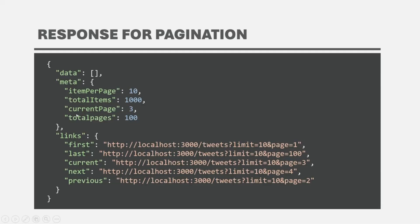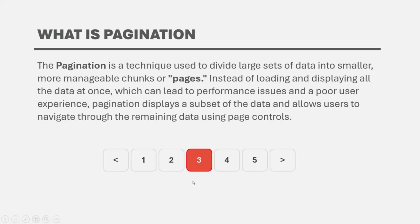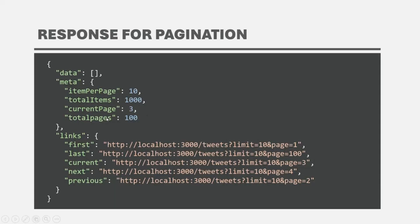In the response, we will also specify what is the current page for which we are sending the data, and how many total pages there are. This information can be used in the frontend to implement the pagination UI. For example, if the user wants to highlight the currently selected page, they can get the current page from the response and highlight it accordingly. In the UI, we will have pagination with all page numbers and previous and next buttons. If we know how many total pages there are, that can also be displayed in the UI. All this information is sent with the meta property.